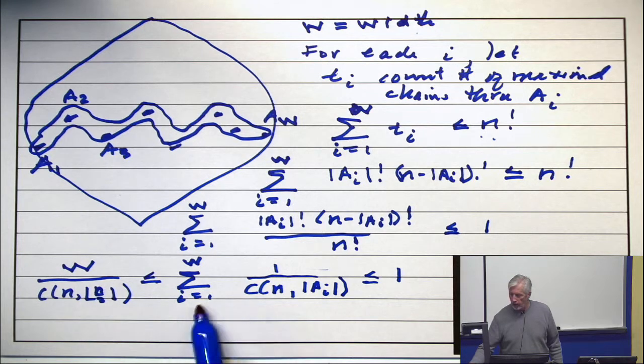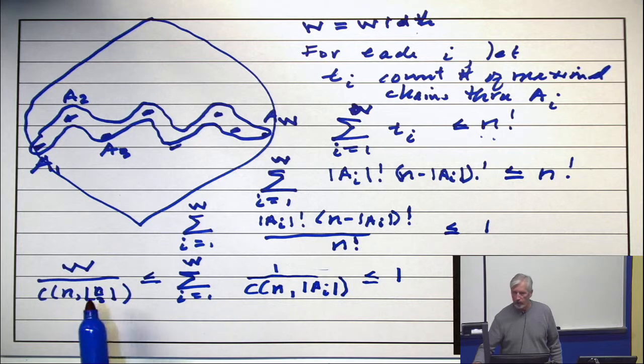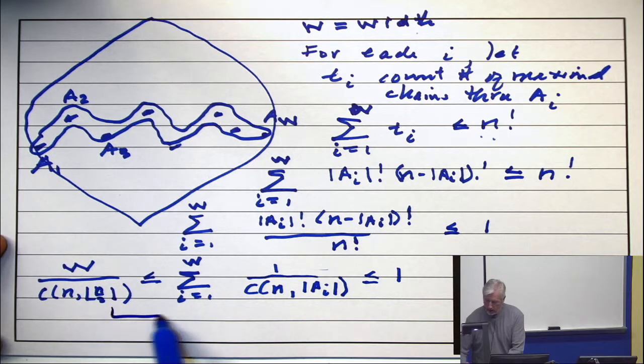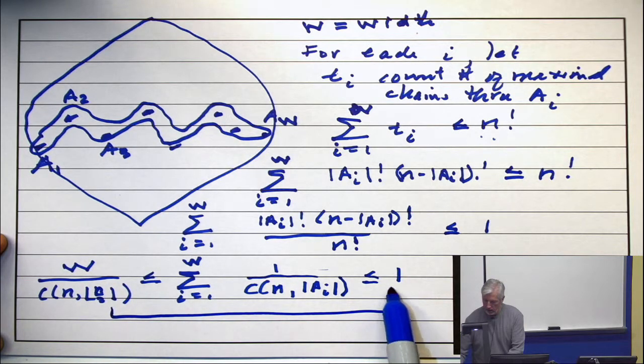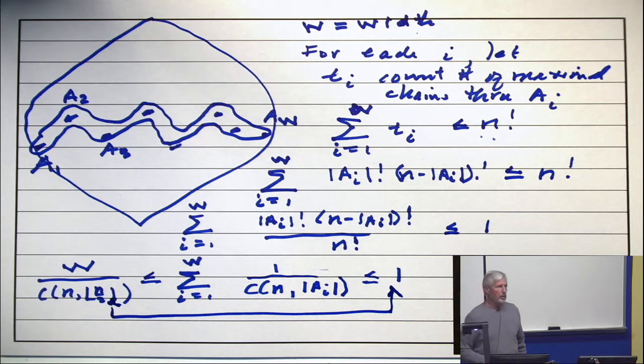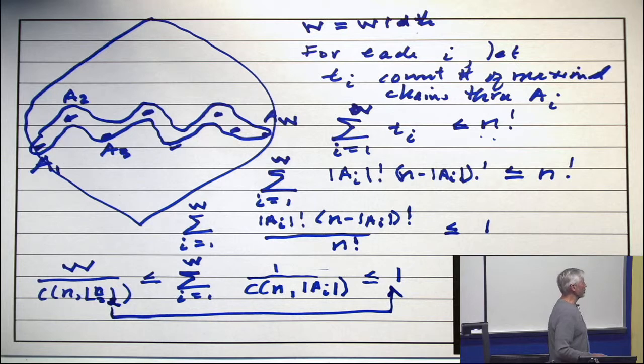Every term here, every term here, every one of those terms is greater than or equal to 1 over the middle coefficient. And now, the inequality is there. Multiply both sides by C n choose n over 2. And you have W is less equal to C n choose n over 2.